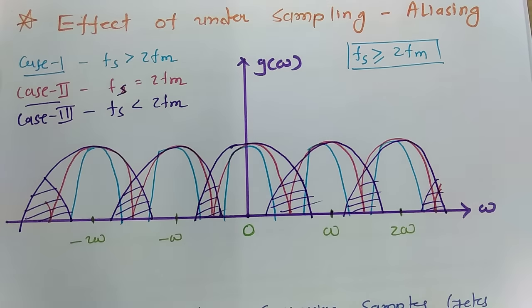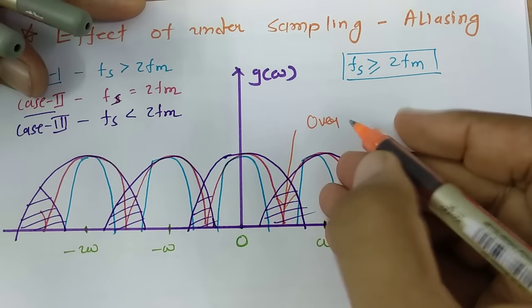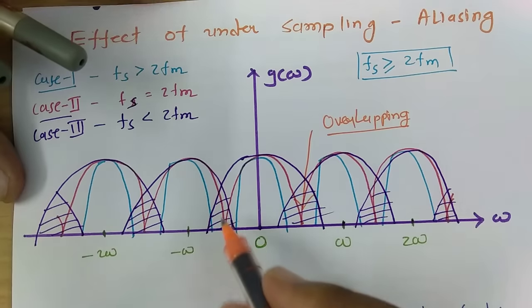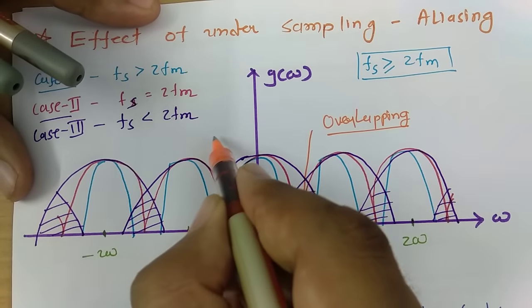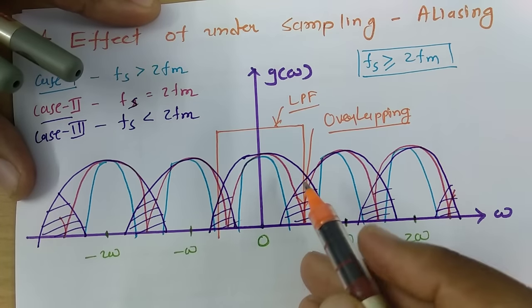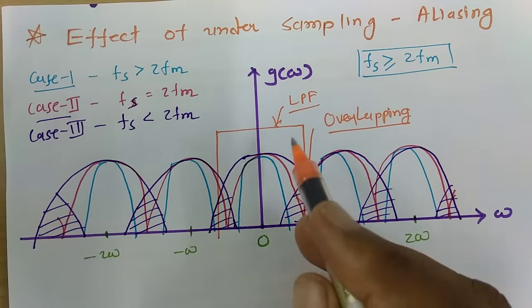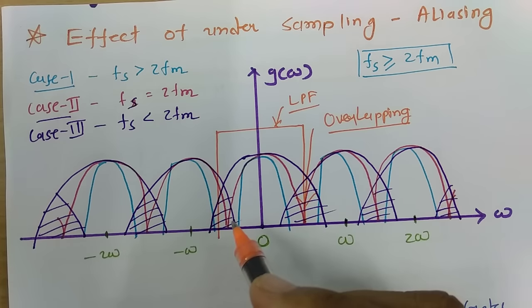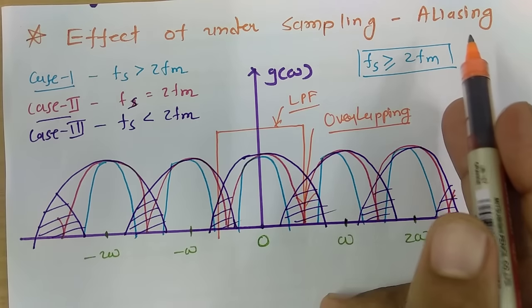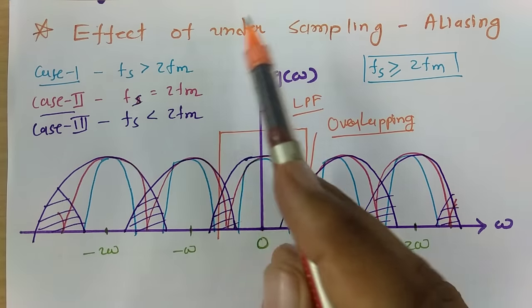Because of this overlapping, when you use a low pass filter to extract the original information, there will be distortion. When you place the low pass filter to extract the signal, it will contain information from multiple overlapping samples. You cannot extract the proper signal because it will be a mixture of two different signals, causing distortion. This is what aliasing — it occurs when fs is less than 2fm, which is undersampling.